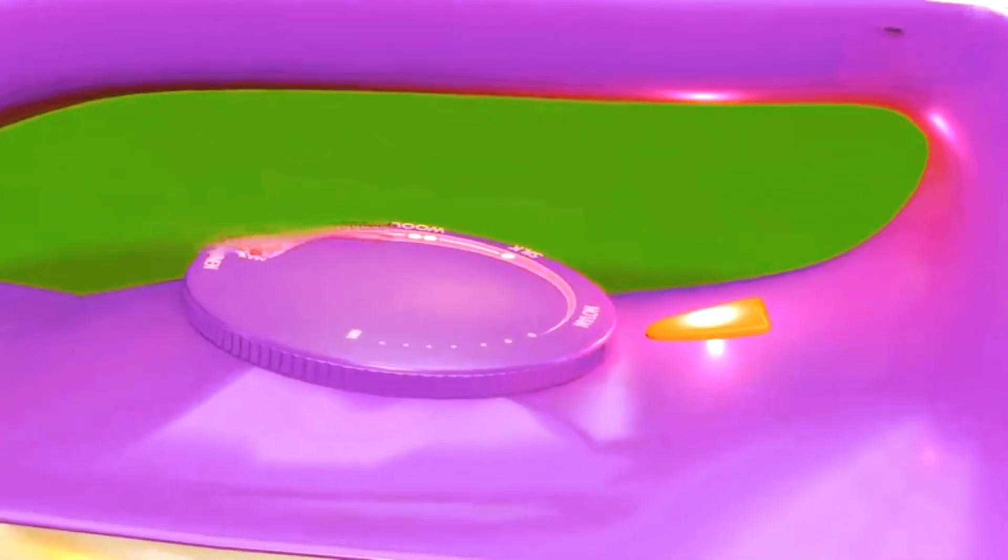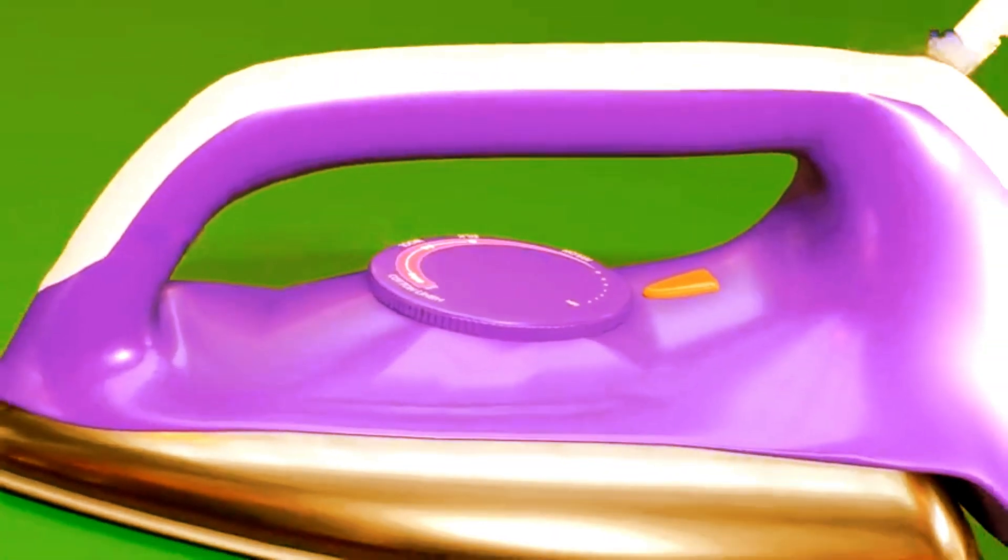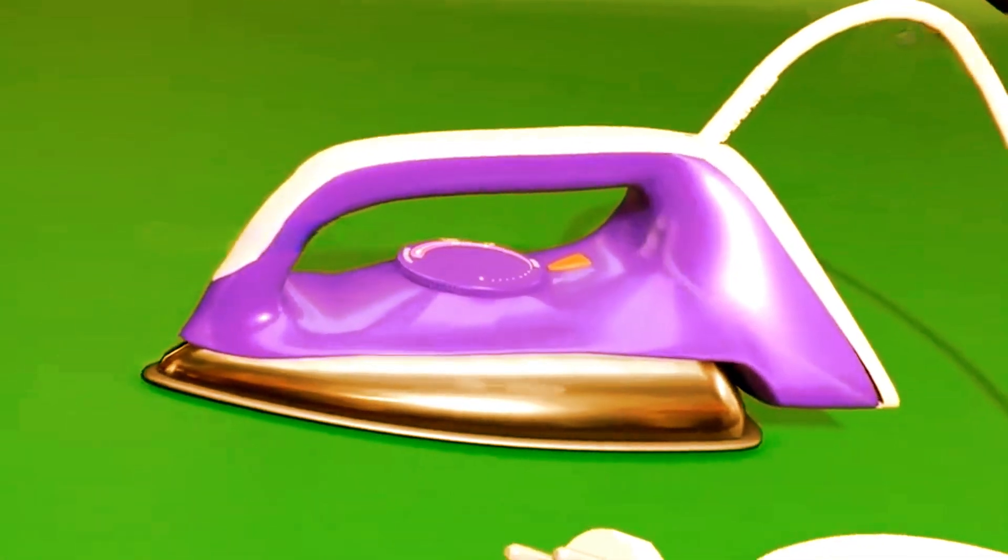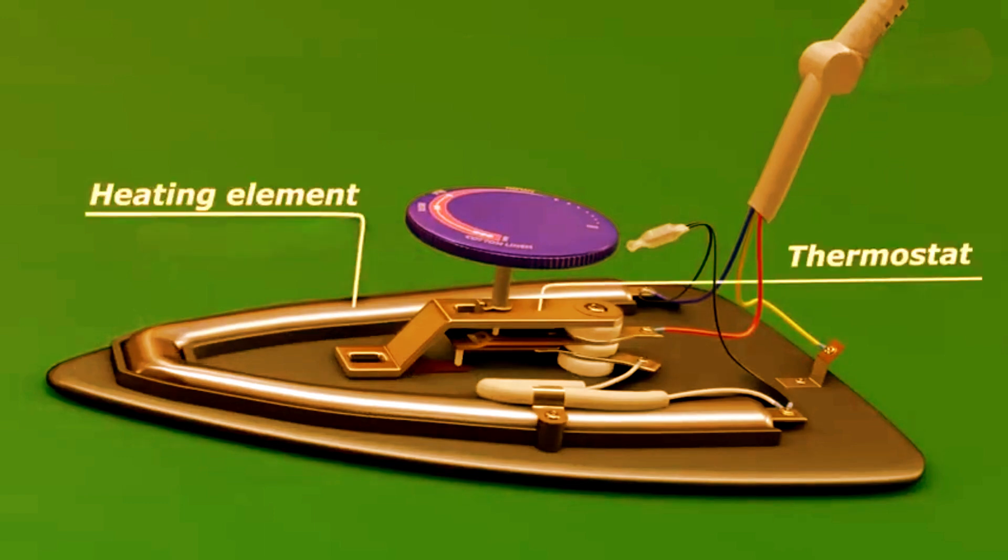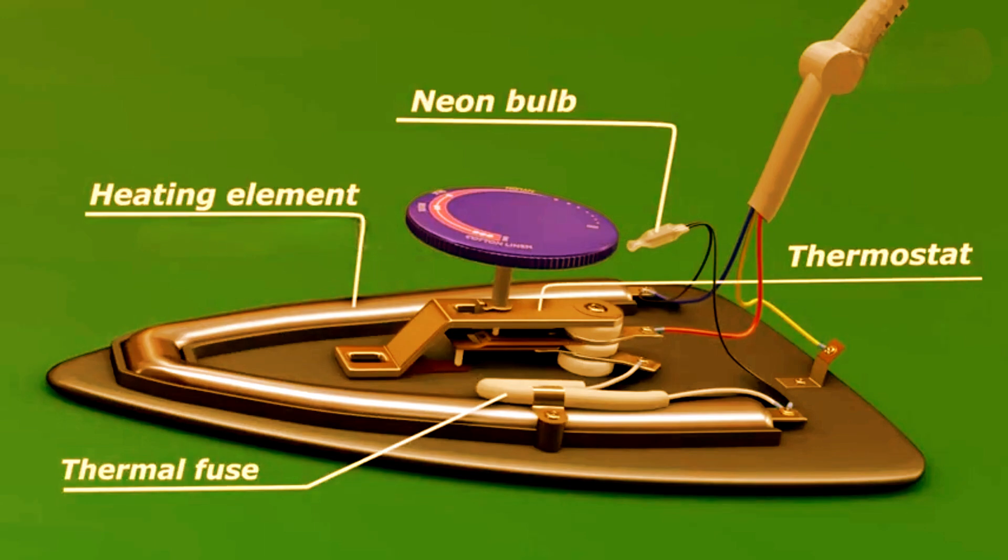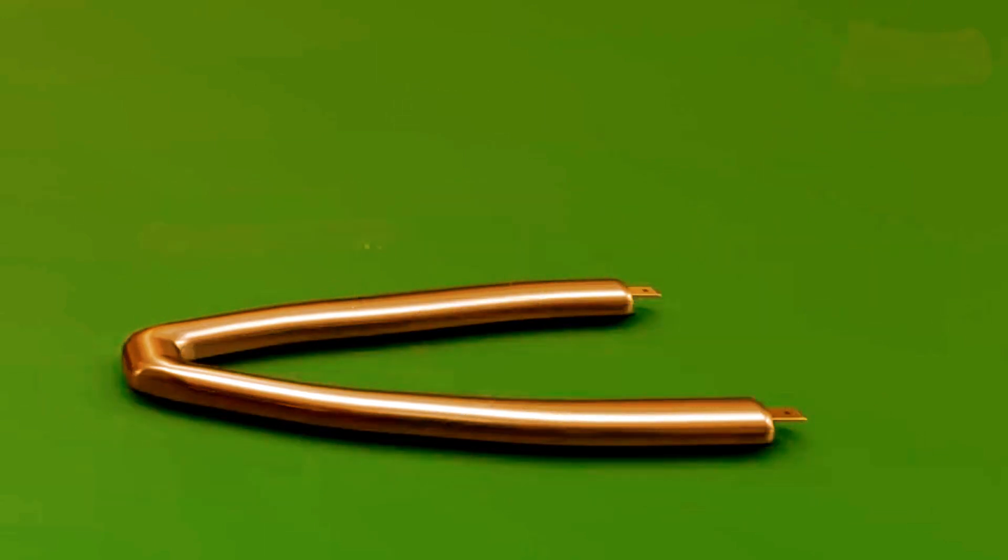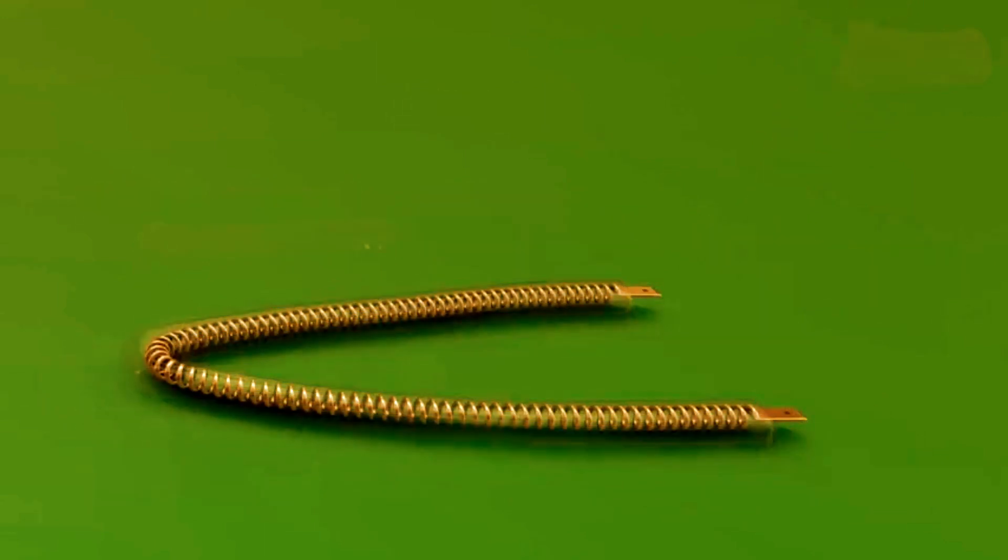An electric iron has a few key parts inside. So let's see what those are. The first is the heating element, the second is the thermostat and the thermal fuse and the neon bulb. The heating element is the main part that gets hot.